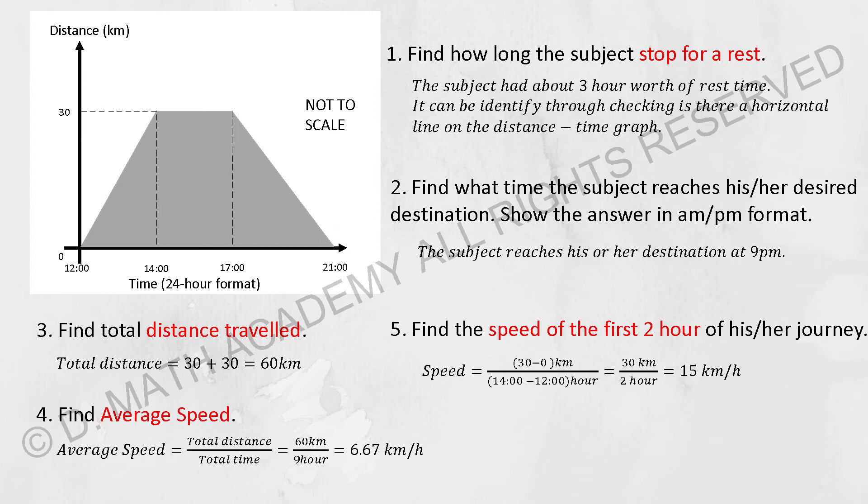To find the average speed, simply take the total distance divided by the total time. From 12 to 21 is 9 hours difference, and the total distance is 60 as calculated in part 3. Your average speed is 6.67 kilometers per hour.